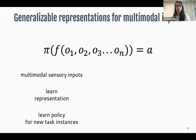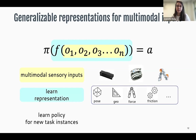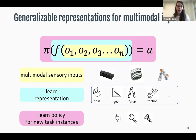Our goal is to learn a generalizable representation. We want to take multimodal sensory input O and learn a function F that gives a representation capturing task-relevant information. We then learn policies pi that take the representation as state input and output an action A executed on the robot. If our representation is generalizable, we can learn policies for different instances in the same task family.